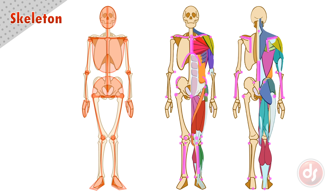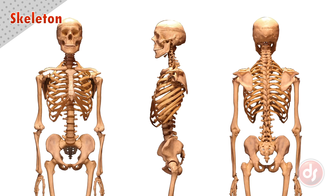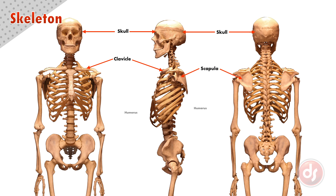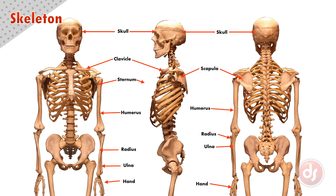Let's name all the parts of the skeleton. The skull is the name for our head, but we will name all the individual parts later. The clavicle is our collarbone. It connects to our scapula on the back, which is our shoulder blade. The humerus is our upper arm bone connecting to the scapula. The radius and ulna are the two lower arm bones, and the radius connects to the hand below. The sternum is our breastbone and where the clavicles attach. The sternum is in the center of our rib cage, which is the solid structure in the upper torso that protects our heart and lungs.